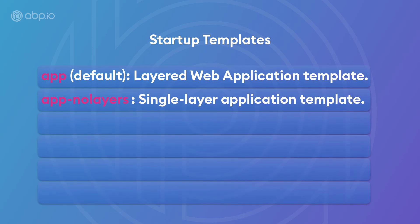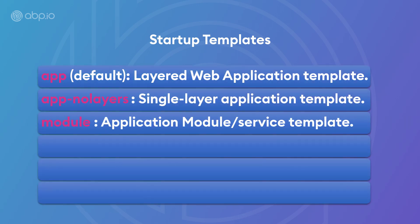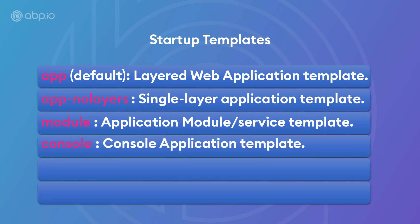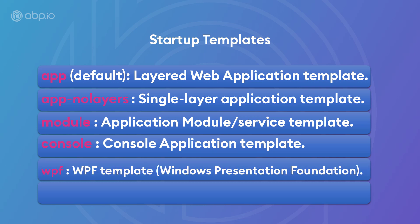Next up is the module template, if you wanted to create a reusable module or microservice. The fourth one is the console template, if you wanted to create a simple console application — maybe your own CLI. And the last two are self-explanatory: the WPF template and the MAUI template.